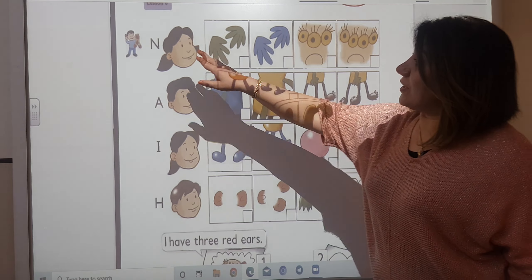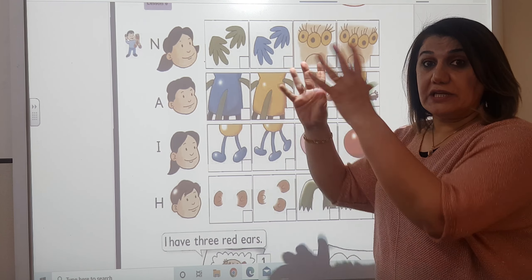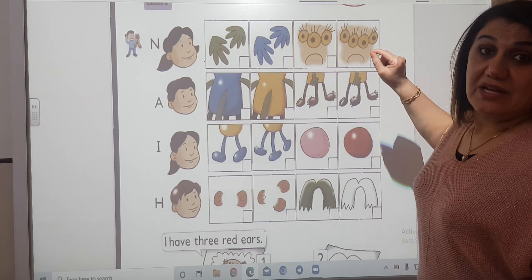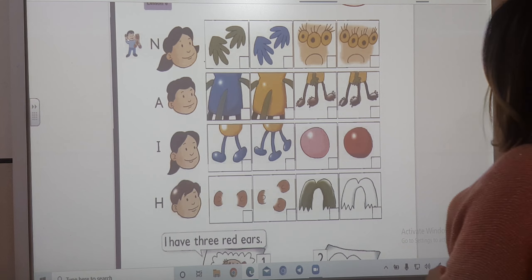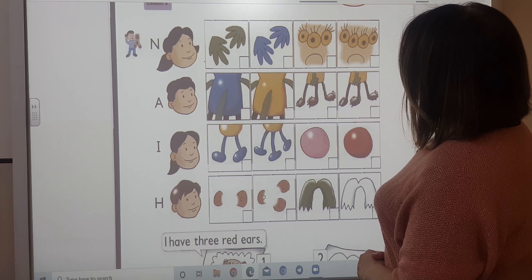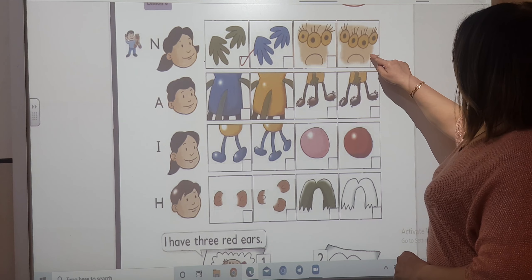So, now we are going to listen to Neda. She is talking about her monster. How he or she looks like. Okay? And we are going to tick these parts. Listen and tick. Hello. I'm Neda. My monster has two green hands and she has four yellow eyes.